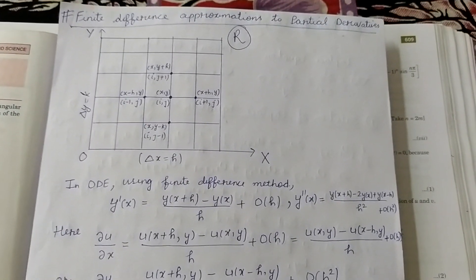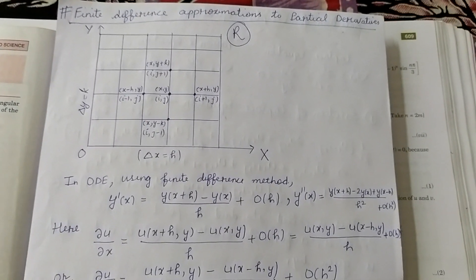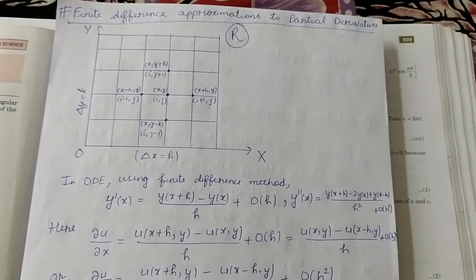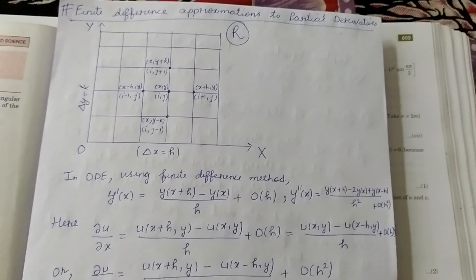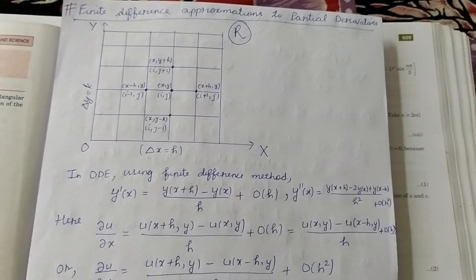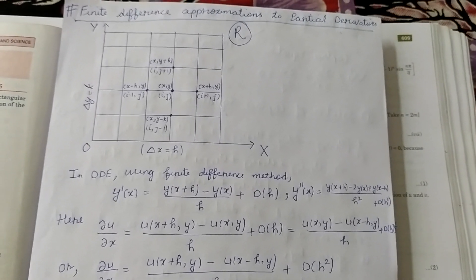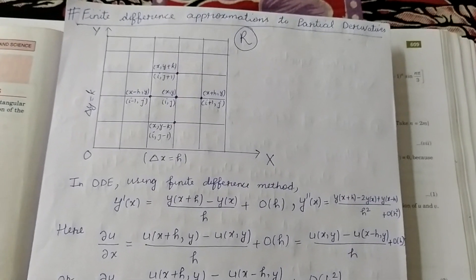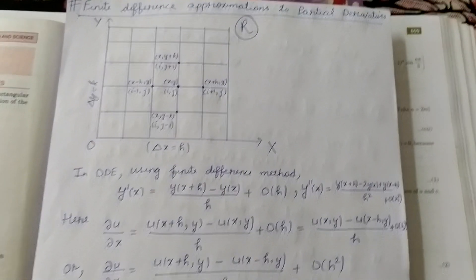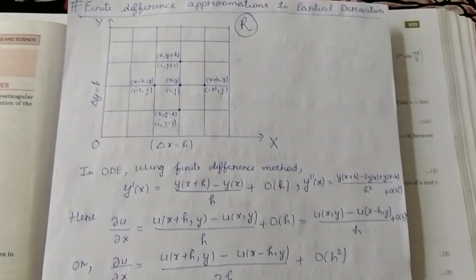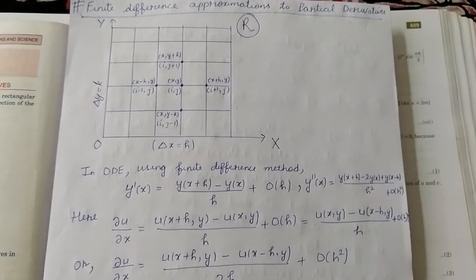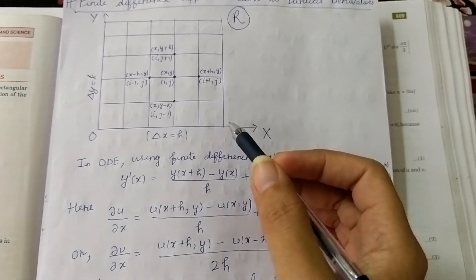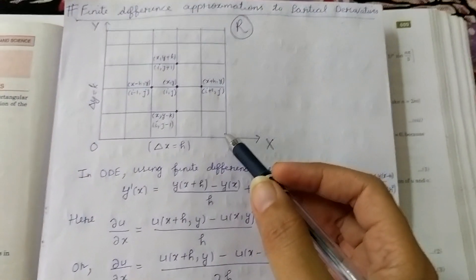Now we will again use the same method to find out the partial derivatives of first and second order. Here we have a region, capital R — it is a rectangular region as you can see in the figure.